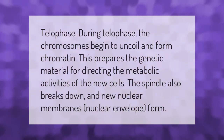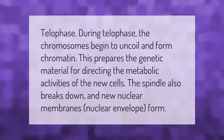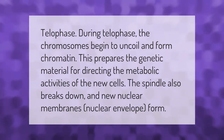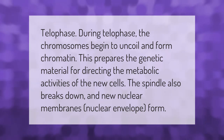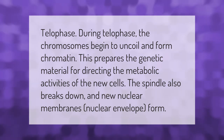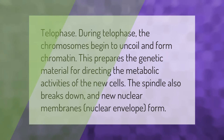During telophase, the chromosomes begin to uncoil and form chromatin. This prepares the genetic material for directing the metabolic activities of the new cells. The spindle also breaks down, and new nuclear membranes, or nuclear envelopes, form.